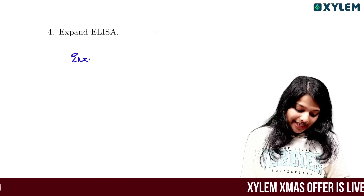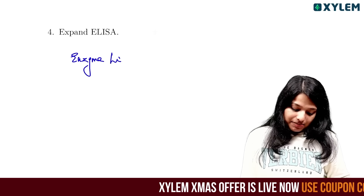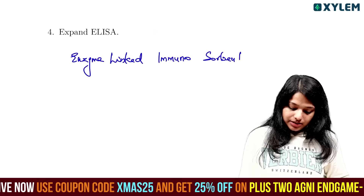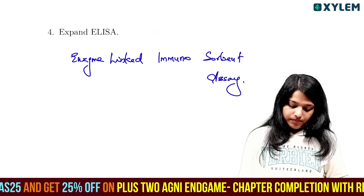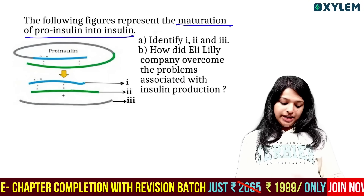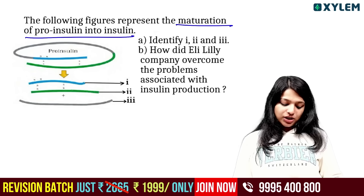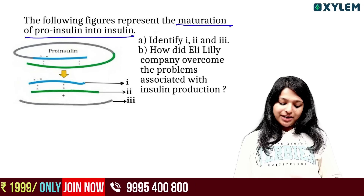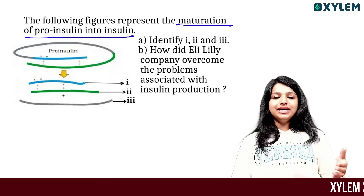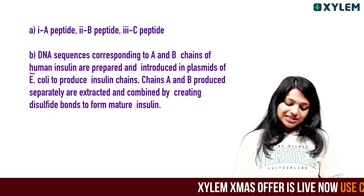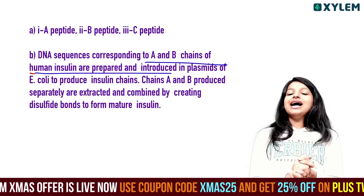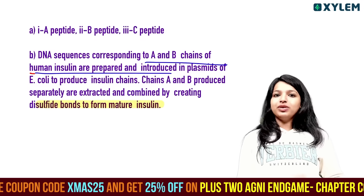Expand ELISA: Enzyme-Linked Immunosorbent Assay. The following figure represents maturation of pro-insulin into insulin. Peptide 1, 2, and 3 are identified. Peptide 2 is the C-peptide. How did Eli Lilly Company overcome problems with insulin production? They separately produced the two chains and then extracted and combined them, removing the disulfide bonds to combine and produce mature insulin.